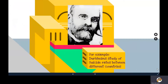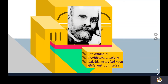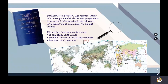Durkheim compared suicide rates between countries over a 300-year period, looking at different levels, rates, and changes. He found that factors like religion, relationships, marital status, and geography all had a role to play in whether people were more or less likely to commit suicide. It highlights studies of the past with no artificial environment since it used historical data, and it reduces ethical problems on such an emotive topic as suicide.